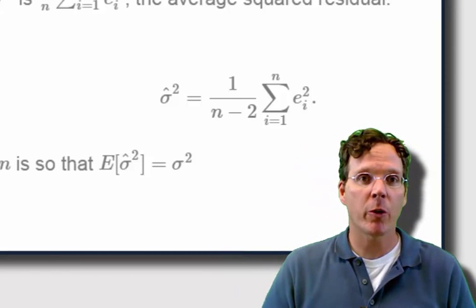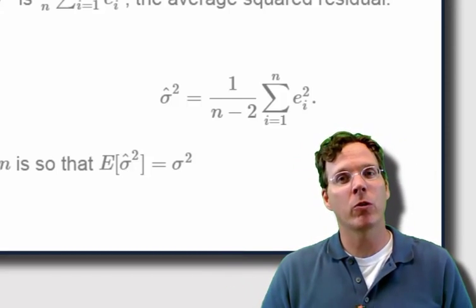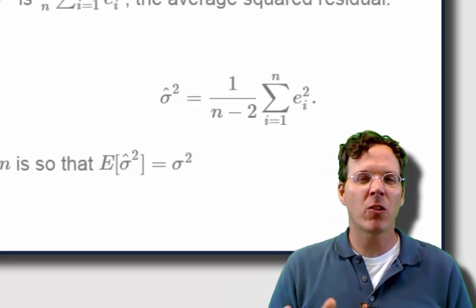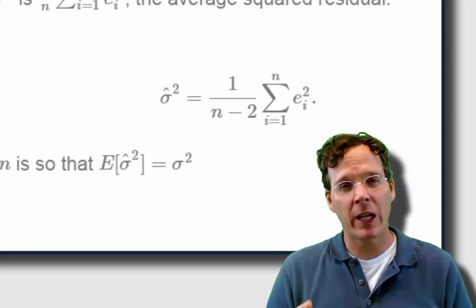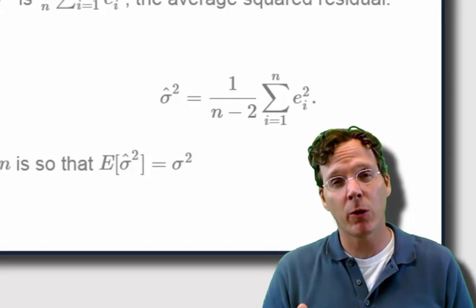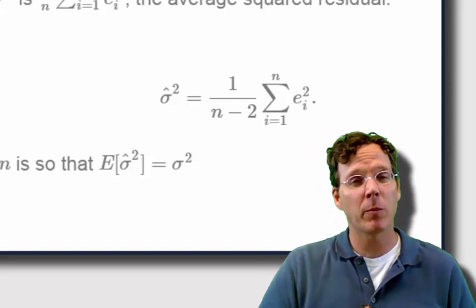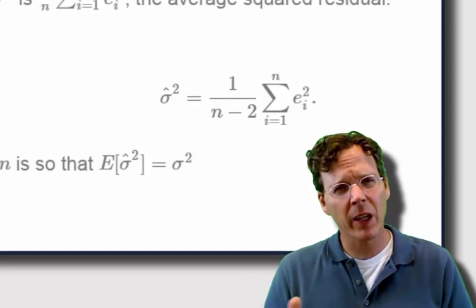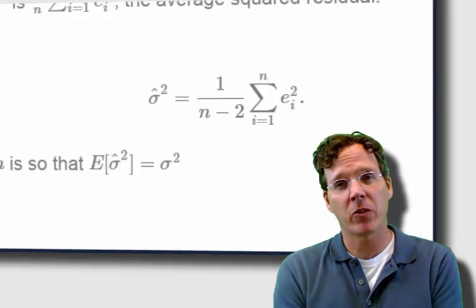If you put another regression variable in there, you have another constraint, you lose 3 degrees of freedom. So in essence, it's sort of like saying you really don't have n residuals. You have n minus 2 of them, because if you knew n minus 2 of them, you could figure out the last two. And that's why it's 1 over n minus 2.